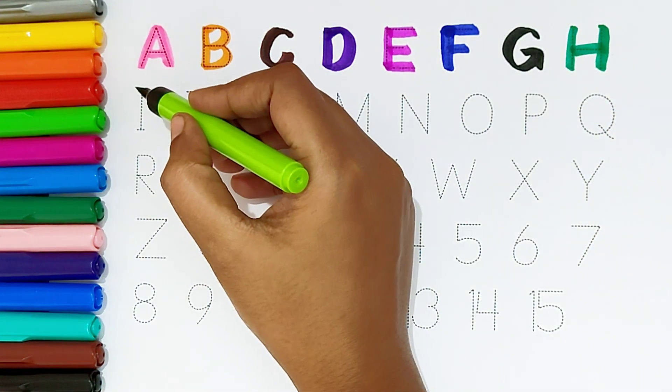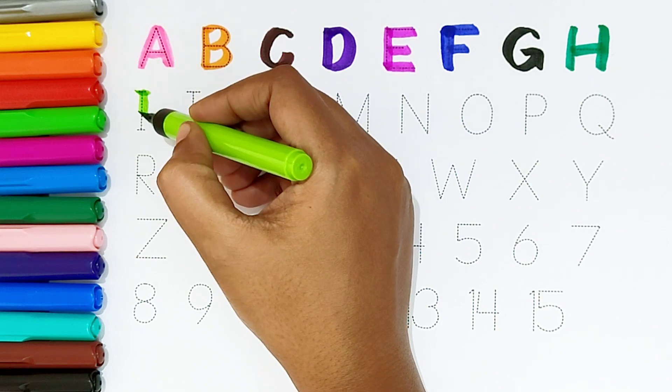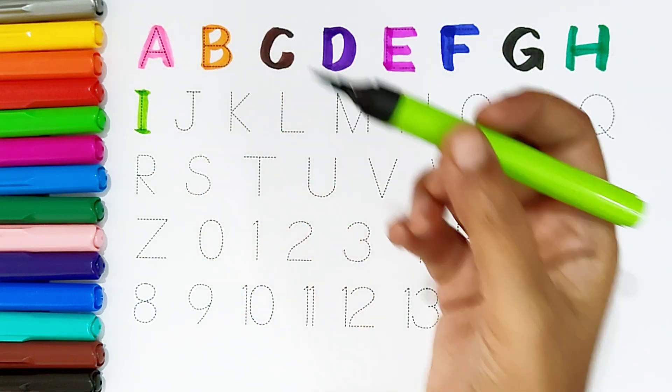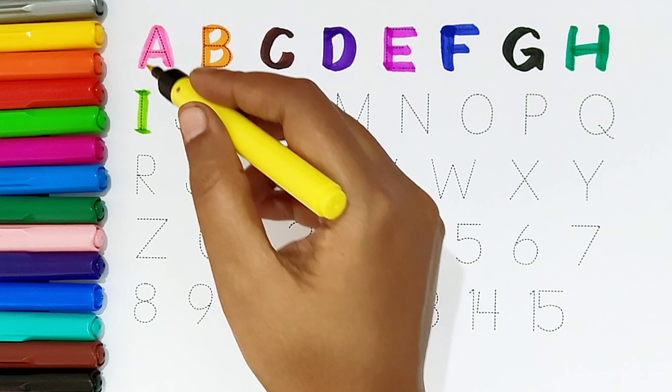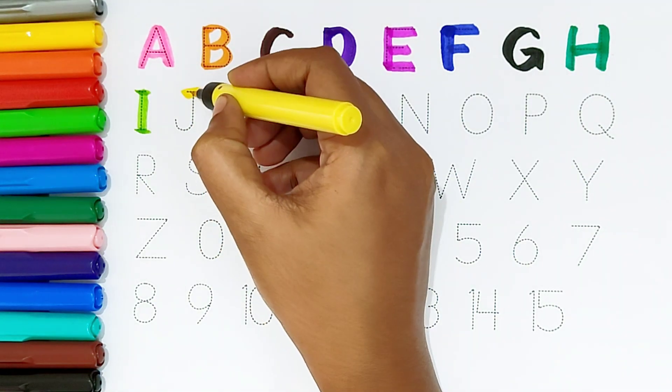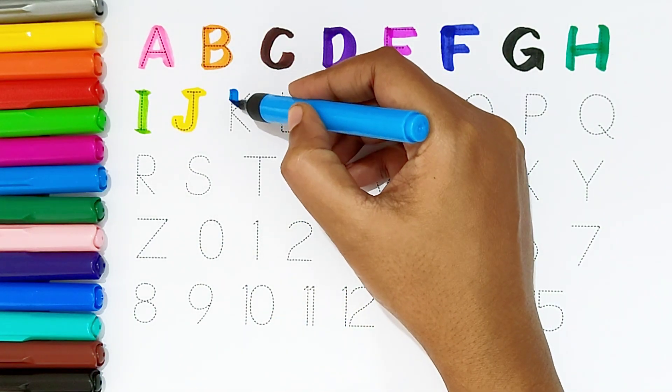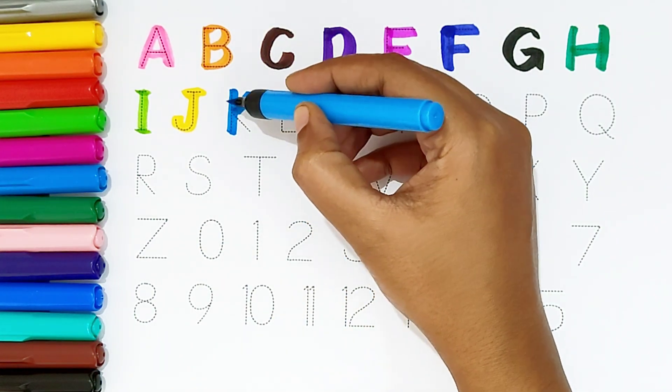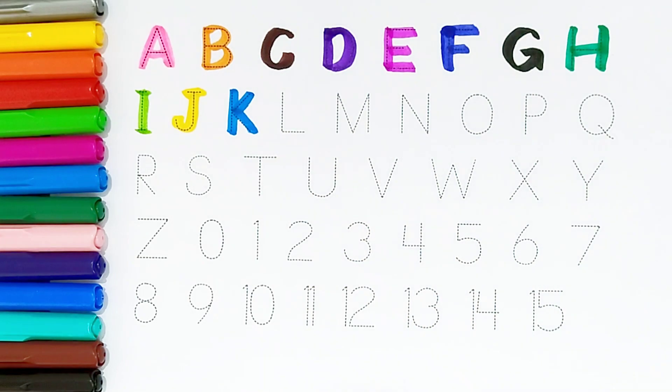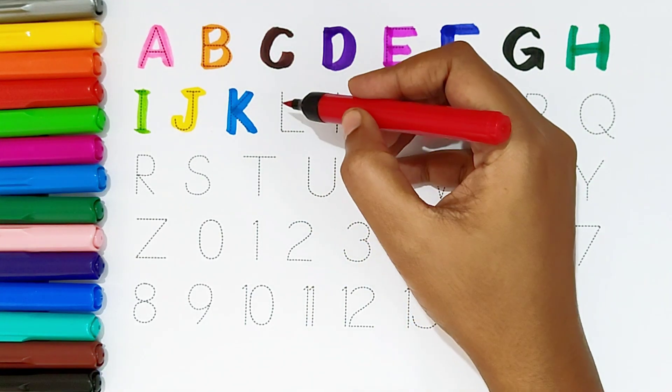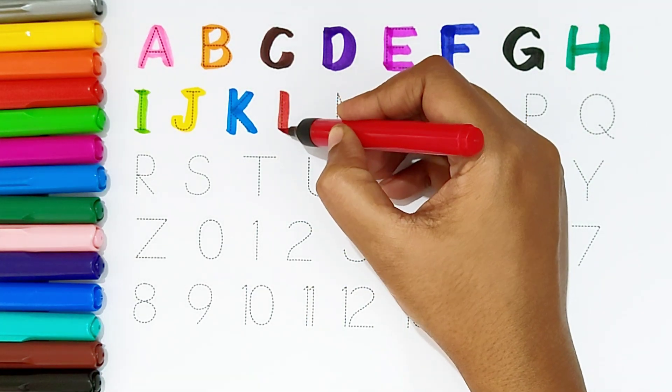I, light green color. I is for igloo. J, yellow color. J is for jaguar. K, light blue color. K is for kitten. L, red color. L is for leopard.